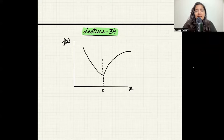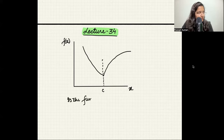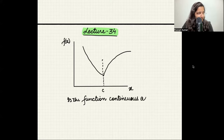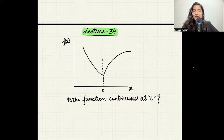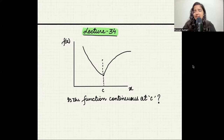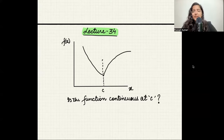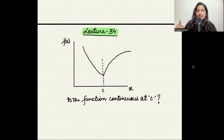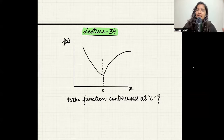Can you tell me, is my function continuous at point c? Based on the definitions we've done in the previous lecture — and if you haven't watched that, I'll link it in the description — is my function continuous? The condition is: left-hand limit at c, right-hand limit at c, and the function value at c — are these three things the same? If yes, then my function is continuous.